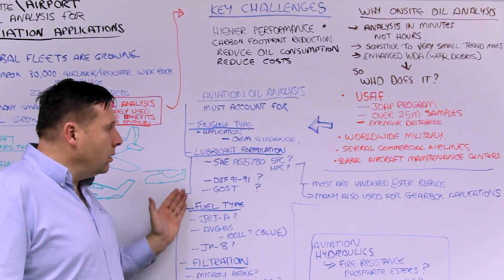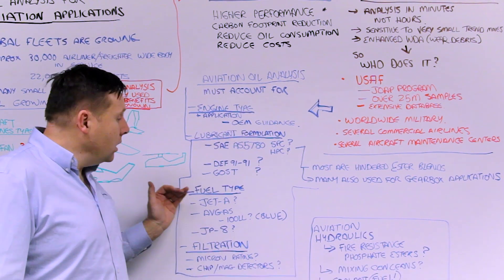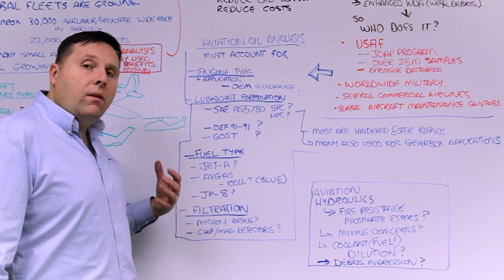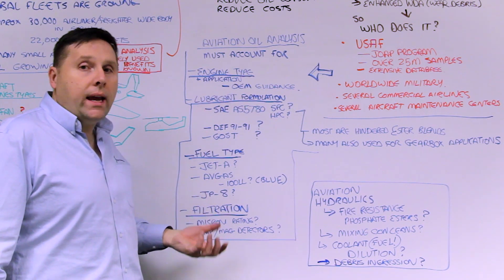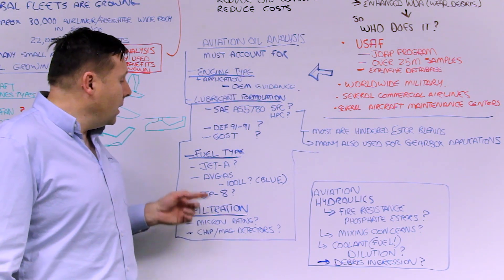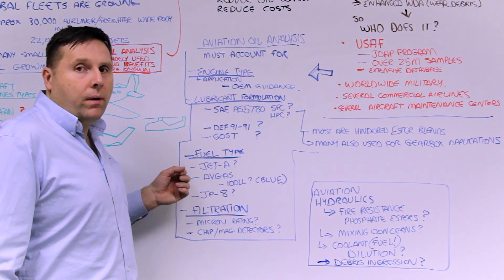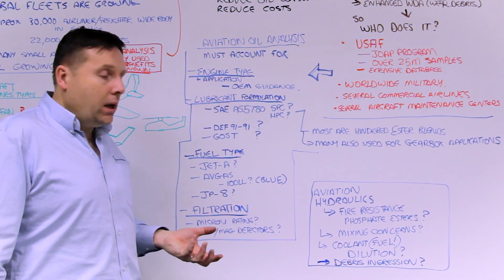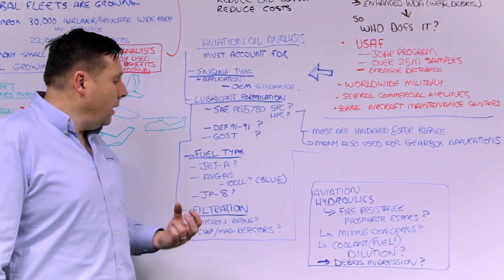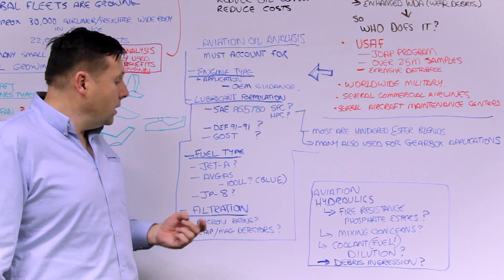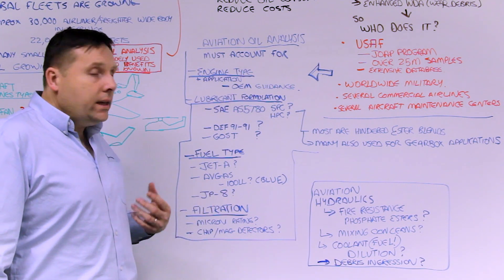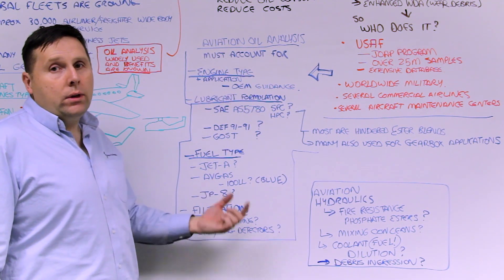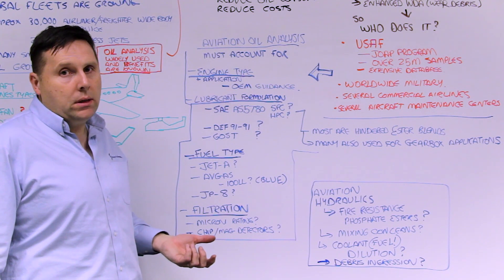You must also consider the fuel used in aviation applications. The majority of wide-body airliners and gas turbine-fired systems use a kerosene-based product, such as Jet-A or JP-8 for military applications. For piston engine applications, Avgas is still widely used — it's like a gasoline blend. One example is 100 LL, which is low-lead leaded gasoline with an anti-knock compound, still widely used in piston engine applications.